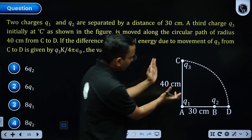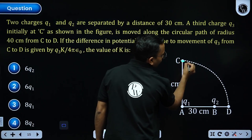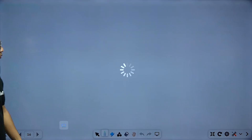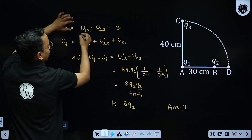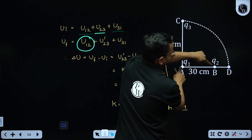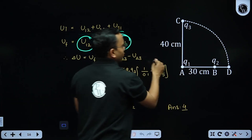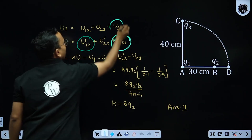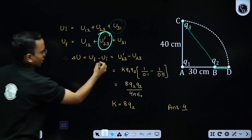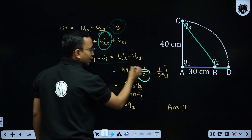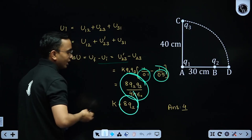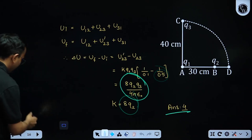Next question: three charges are arranged and charge q3 is moved from point C to point D — find the change in potential energy. The PE between charges 1 and 2 does not change (neither moves). The PE between charges 3 and 1 does not change (that distance stays 40 cm). Only the PE between charges 2 and 3 changes: the distance goes from 50 cm initially to 10 cm finally. Computing Kq₁q₂(1/R_final − 1/R_initial) gives the answer as option 4.